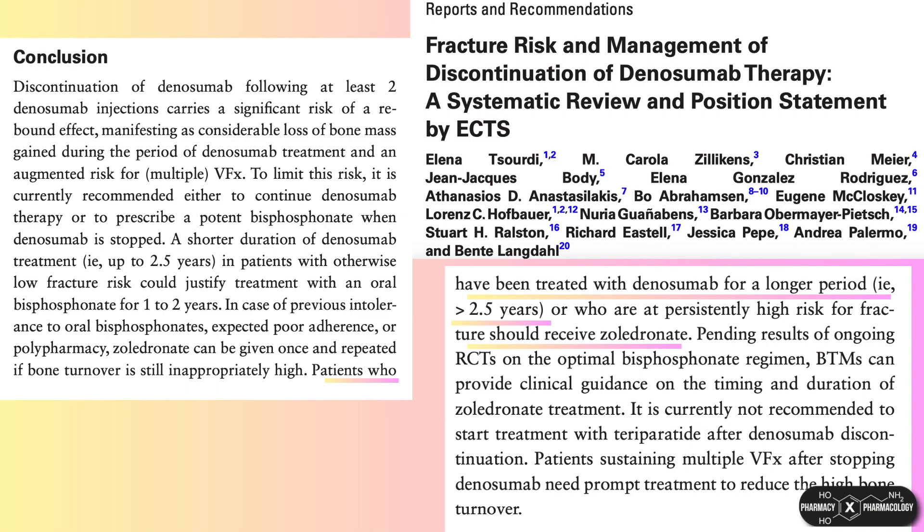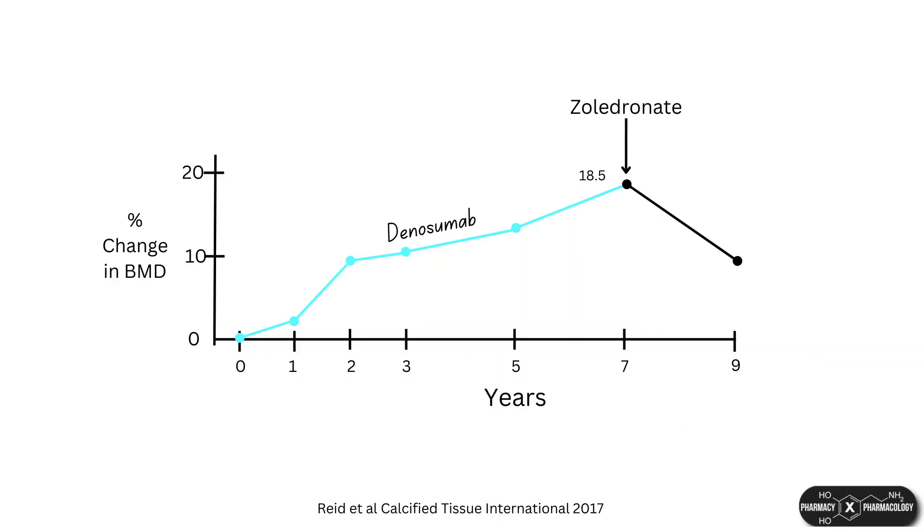Although for longer courses of denosumab, zoledronate will only be able to partially counteract the hyperresorption.